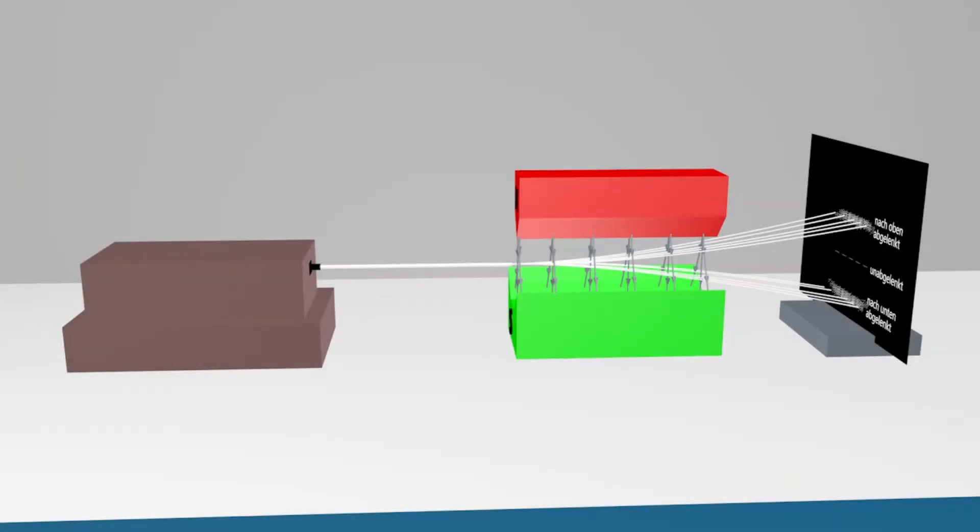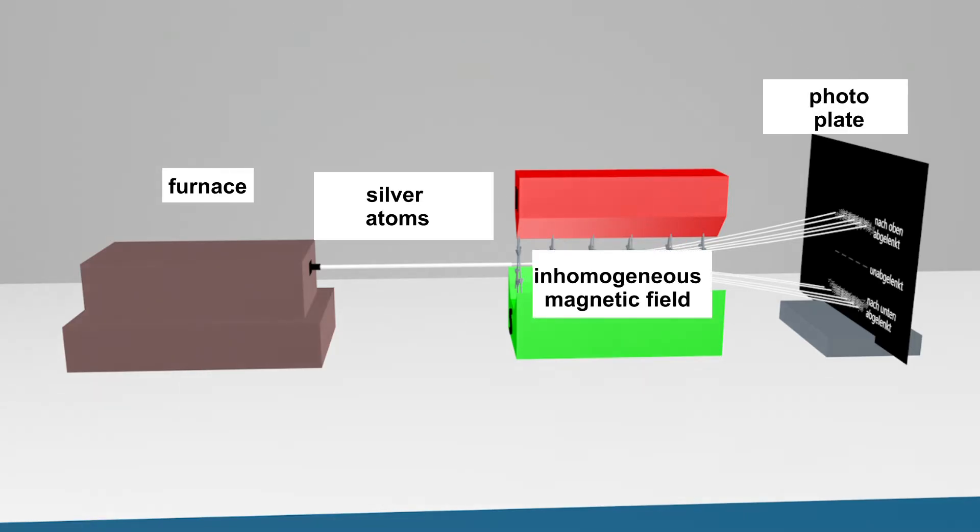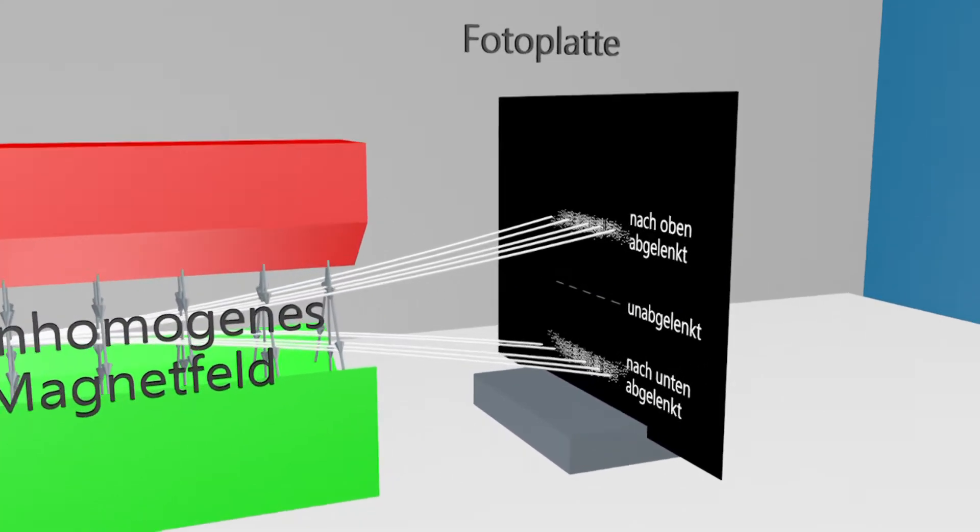In this experiment, silver is heated so much in a furnace that it becomes gas. A few individual silver atoms leave the furnace through a small aperture in the direction of an inhomogeneous magnetic field.